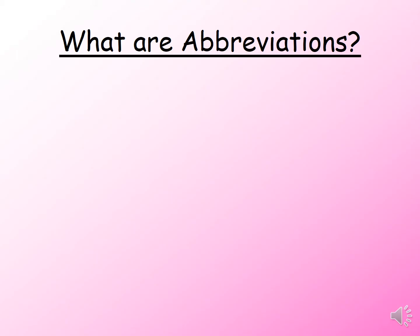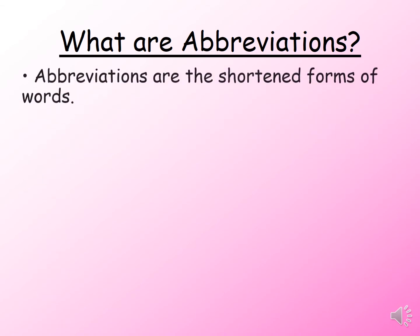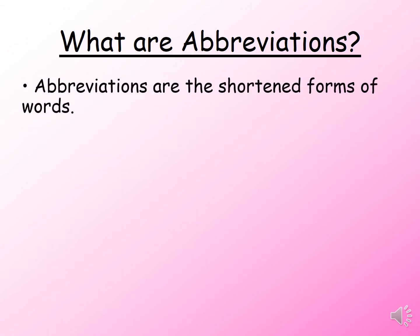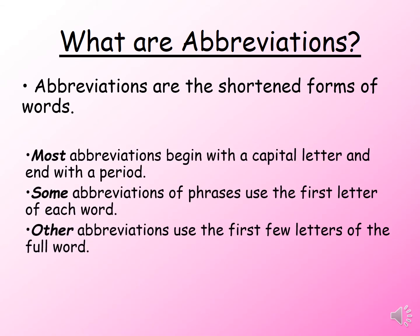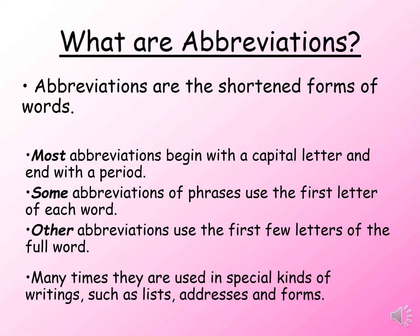What are abbreviations? Abbreviations are the shortened forms of words. Most abbreviations begin with a capital letter and end with a period. Some abbreviations of phrases use the first letter of each word, and other abbreviations use the first few letters of the full word. Many times they are used in special kinds of writing such as lists, addresses, and forms.